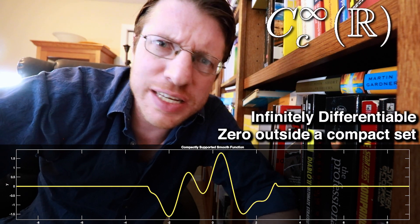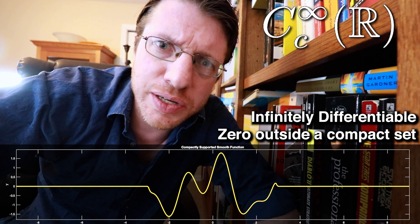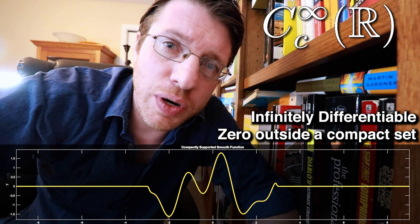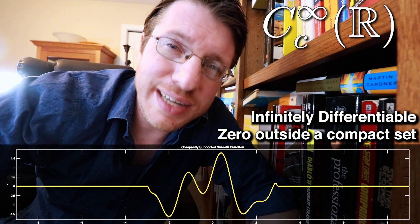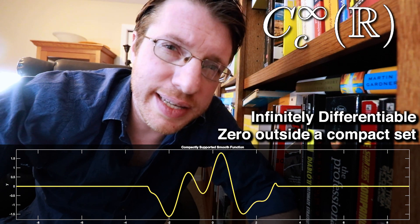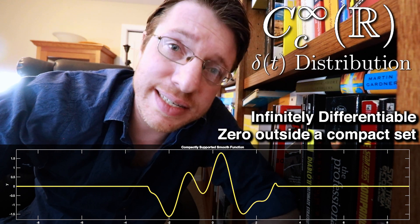The first vector space I want to talk about is the space of C-infinity functions with compact support. These are functions that can be differentiated as many times as you like and you still get a continuous function. They're also only non-zero in a small bounded region. When you talk about the delta function working on this vector space, this is what you get as a distribution.